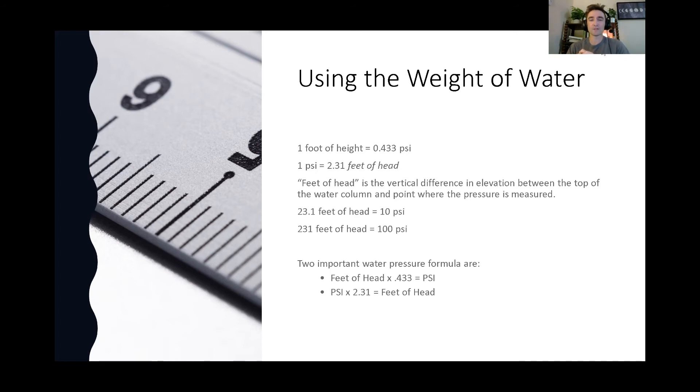So these are the two important factors. And as a formula, you can say the feet of head times 0.433 equals your psi. So if you know how many feet of head you have between you and your irrigation source, you multiply that by 0.433 and that's your pressure. Alternatively, if you know your pressure, you multiply that by 2.31, that gives you your feet of head. How high above you is the column of water.